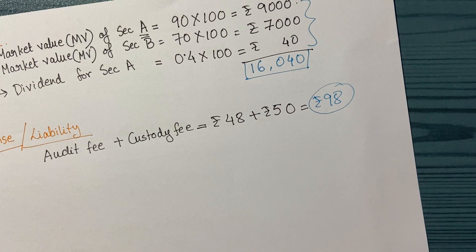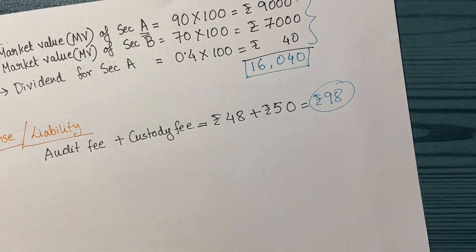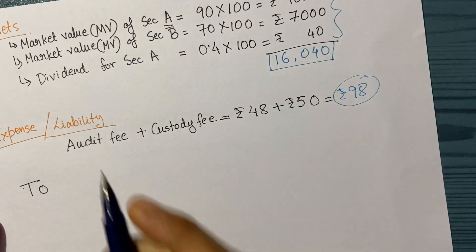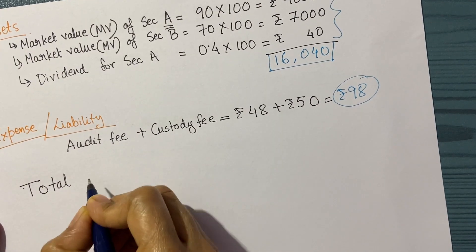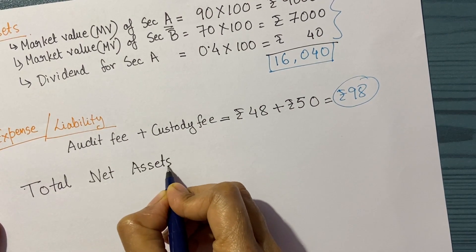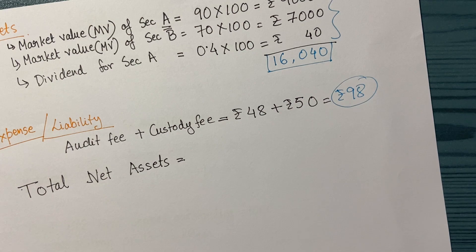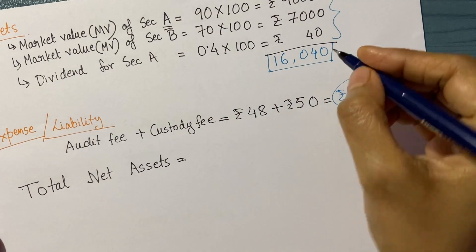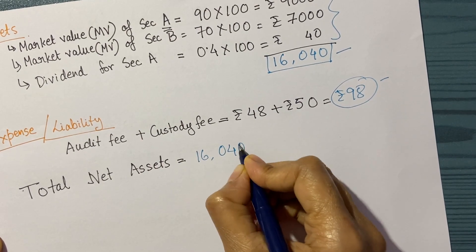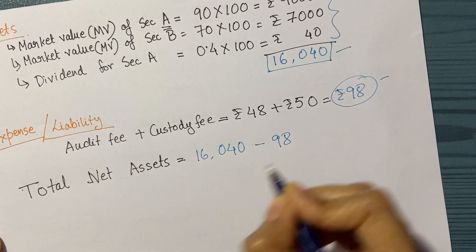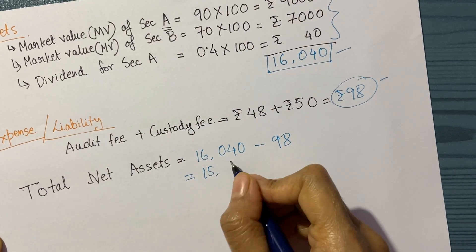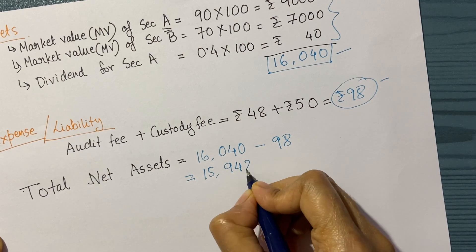Now I'm calculating my total net asset. As I explained this simple formula in my prior video, total net asset equals assets minus liabilities. So 16,040 rupees minus 98 rupees equals 15,942 rupees.